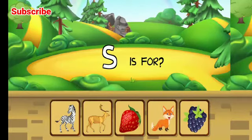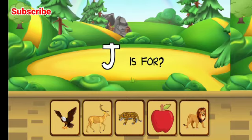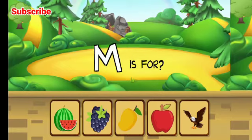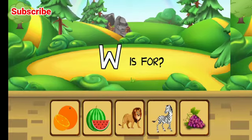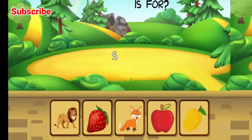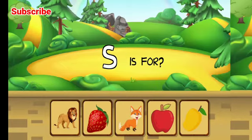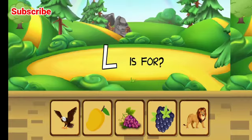Select the right image. S is for strawberry, excellent. J is for jaguar, awesome. M is for mango, correct. W is for watermelon, excellent. S is for strawberry, great job.